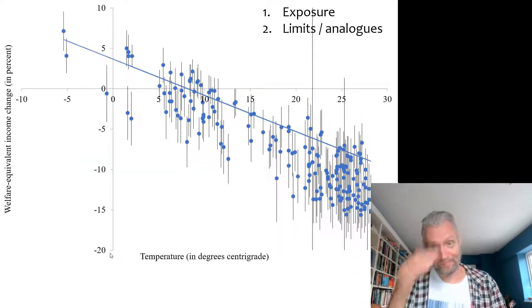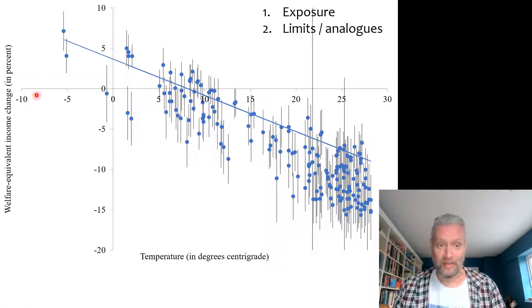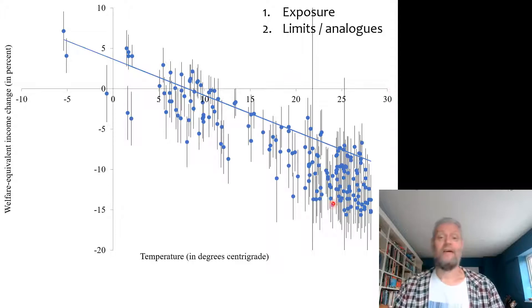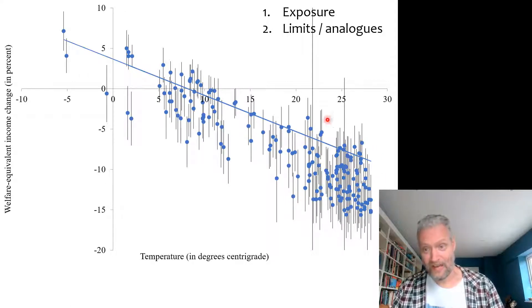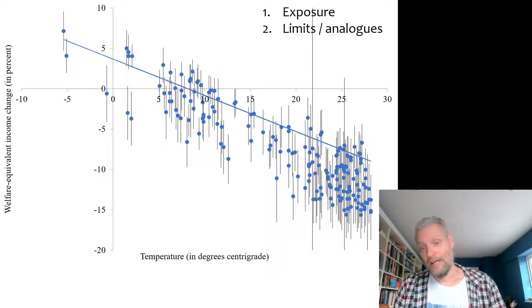The second reason uses the same data, but now we plot the impact of climate change against the current climate. What you see is another clear pattern: the negative impacts of climate change are concentrated in hot countries, and the positive impacts of climate change are concentrated in cold countries.